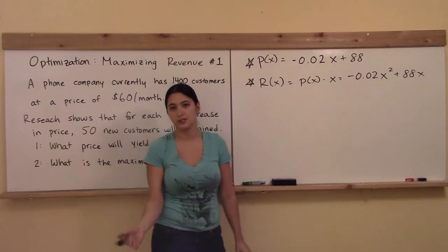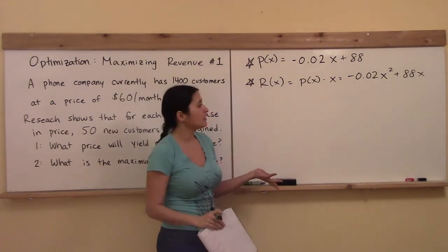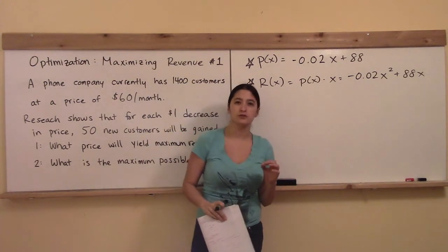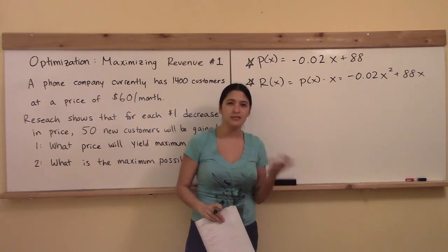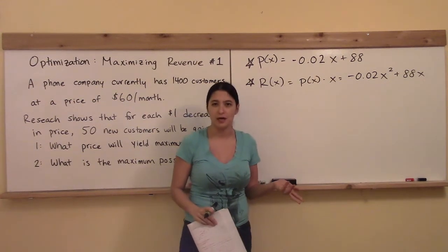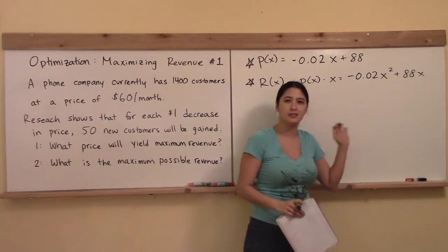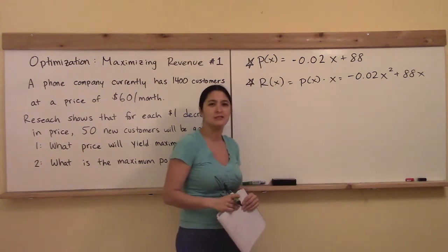So now I've formed my total revenue function, and just as a quick check there, usually your revenue goes through the point zero, zero, because if you don't sell anything, you don't make any money, right? And so if I plug in zero here, I get zero, and that's just a quick check that that's making sense to me.